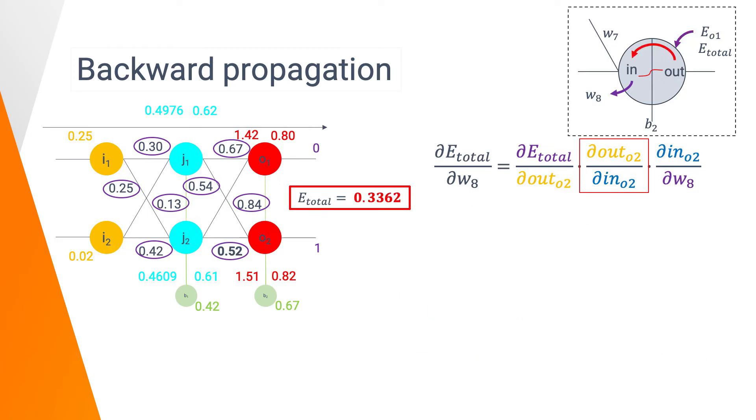Let's get on the next term, which is really simple to compute. As between the input and the output of our neuron, we only have the activation function. Here, the sigmoid as reminder. So, we just need to derivate the sigmoid function. And we obtain this really simple formula which leads us to a value of 0.1476.